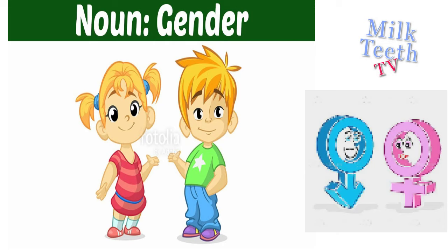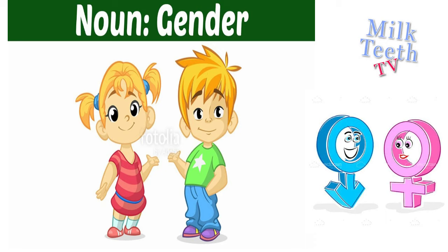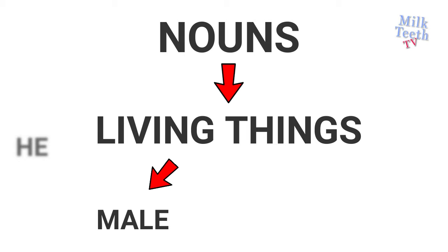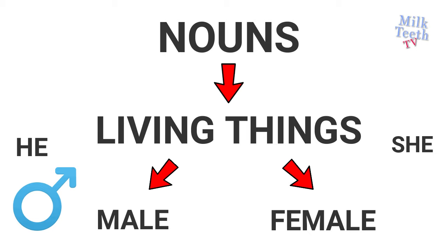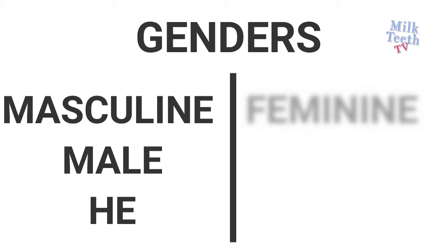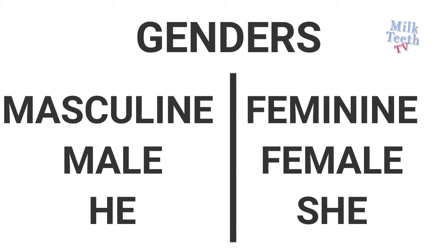Hi, my little friends! Today we will learn about genders. Let's understand what gender is. All nouns have a gender. Nouns which are living things are either males — that is the 'he' gender — or females, that is the 'she' gender. Genders are of two types: masculine, or the male or 'he' gender, and feminine, or the female or 'she' gender.